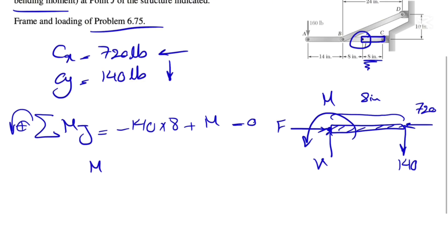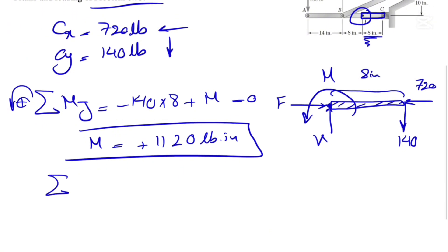So we can find our M, our first reaction here, 140 times eight. So we'll be 1120 pounds-inch and the positive sign shows that the moment is counter-clockwise. So our assumption was correct.